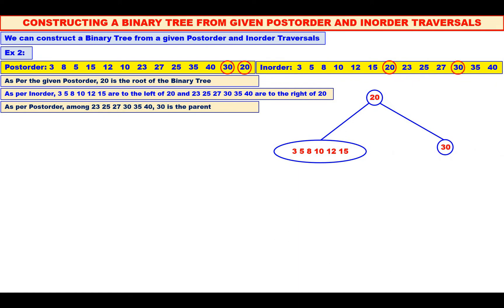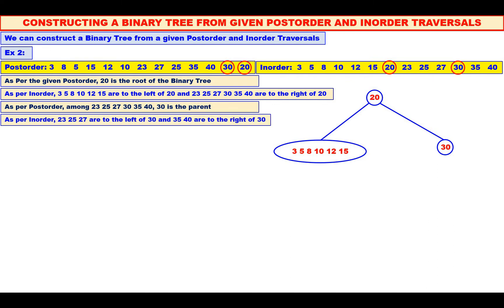Now in the inorder, carefully observe. To the left of 30 we have 23, 25, 27. To the right of 30 we have 35 and 40. Therefore, 23, 25, 27 should be in the left sub-tree and 35, 40 should be in the right sub-tree of 30.